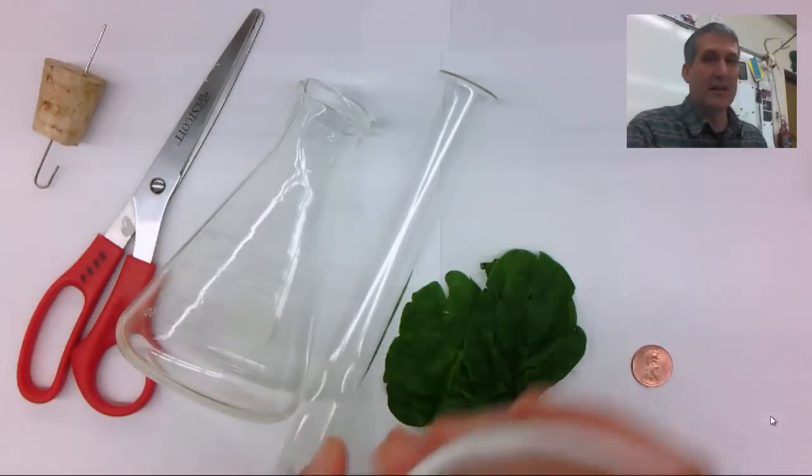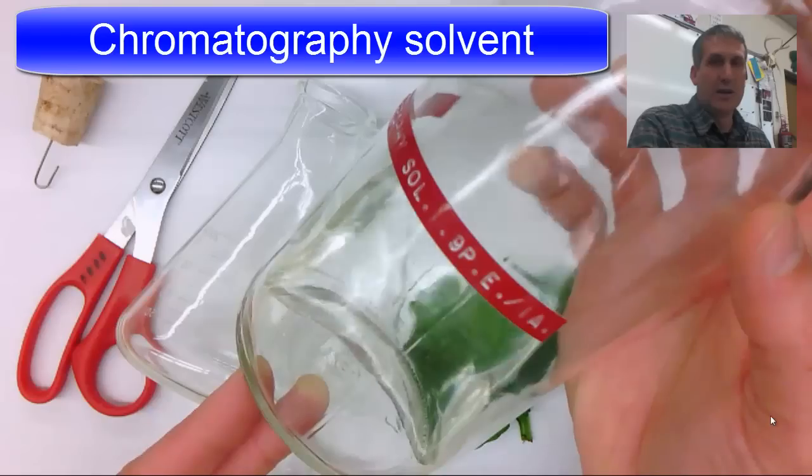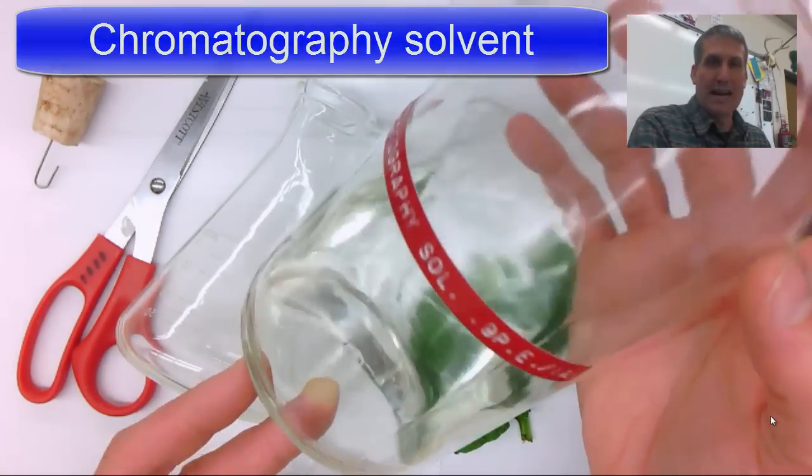And the last thing you'll need is the chromatography solvent itself which is nine parts petroleum ether and one part acetone.